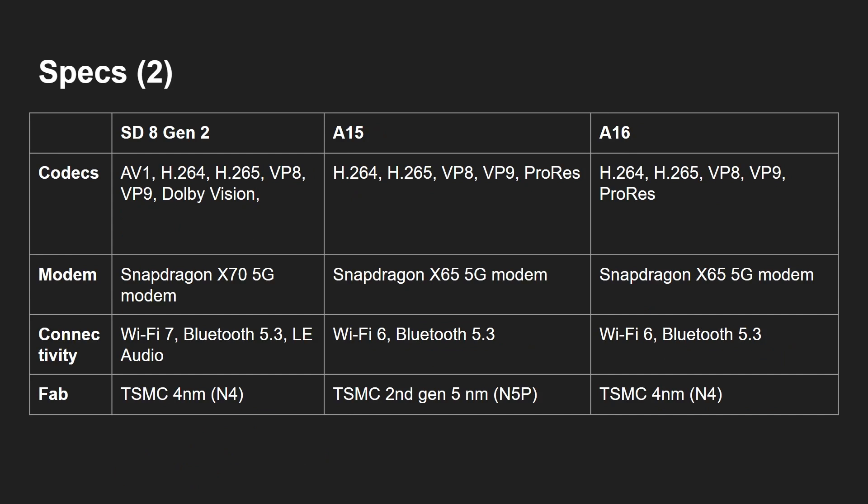On video codecs, Apple devices support ProRes, H.264, and H.265, whereas the Snapdragon 8 Gen 2 supports H.264, H.265, Dolby Vision, and AV1. If AV1 is in your future for future-proofing, the Snapdragon 8 Gen 2 is the way to go. All three devices use Snapdragon 5G modems — the X65 in Apple and X70 in the Snapdragon 8 Gen 2. The Snapdragon is Wi-Fi 7 ready, while Apple devices use Wi-Fi 6, and the Snapdragon also supports LE audio.